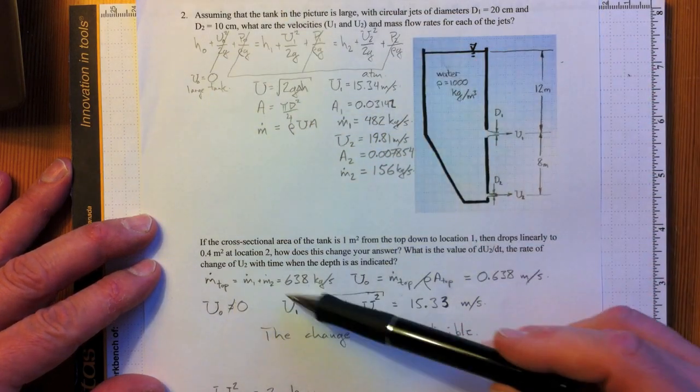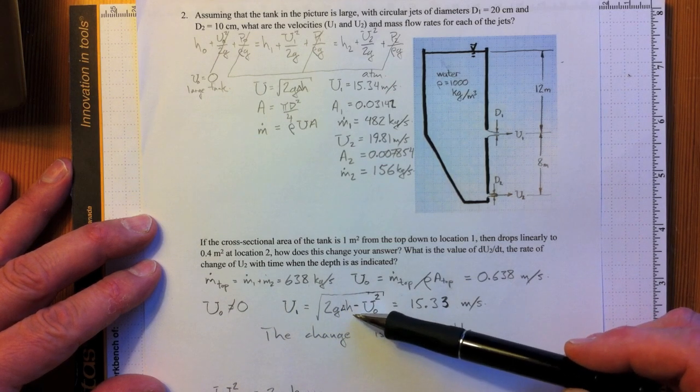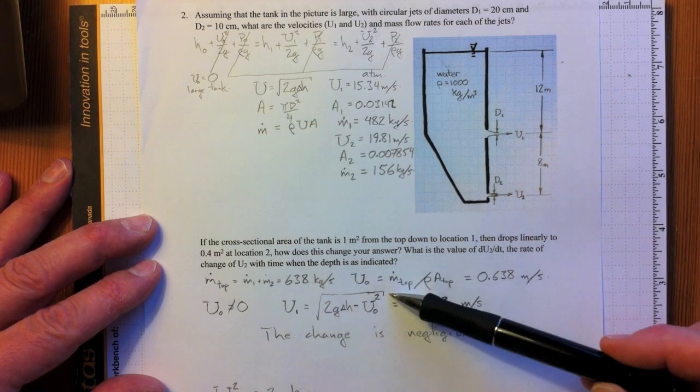So if U0 isn't equal to zero, then U1 will be equal to the square root of 2G delta H, just like before, minus U0 squared all square root.